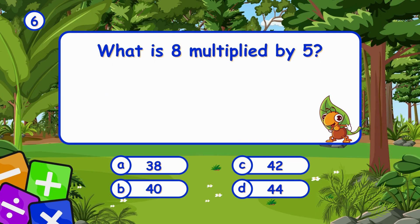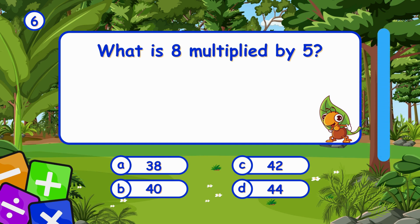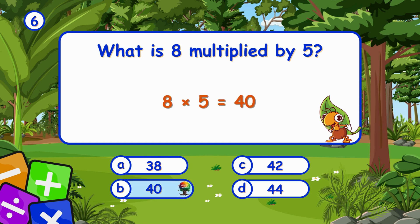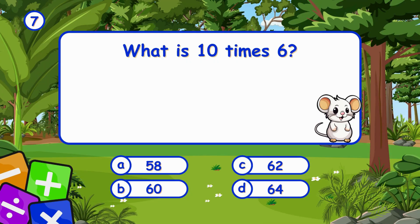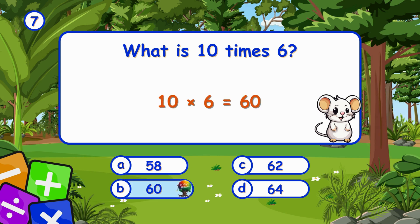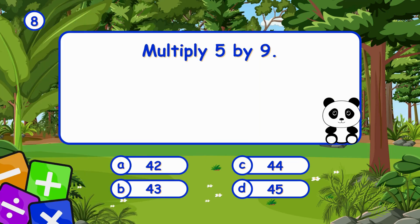What is eight multiplied by five? It's B, 40. Eight times five is 40. What is ten times six? It's B, 60. Ten times six is 60.